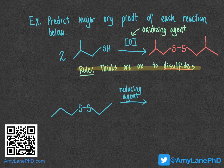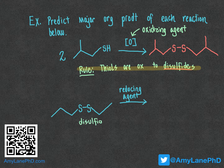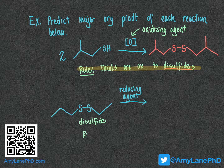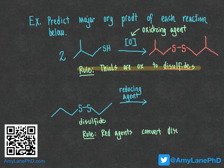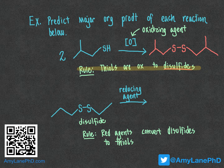We can also work the reverse reaction direction, where we start with a disulfide molecule — recognized by its sulfur-sulfur bond — and treat it with a reducing agent. There's no fancy abbreviation for reducing agents, so we just write that out. The general rule is that reducing agents will convert disulfides into thiols. We envision that the reducing agent breaks the sulfur-sulfur bond and replaces each end with a bond to hydrogen.